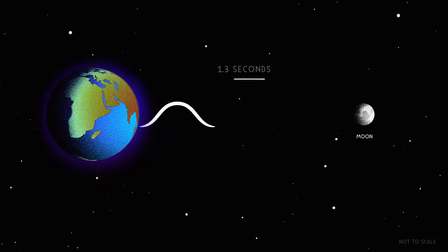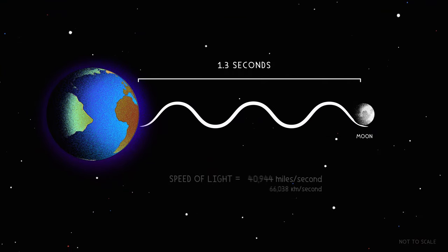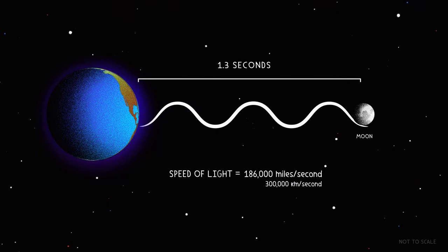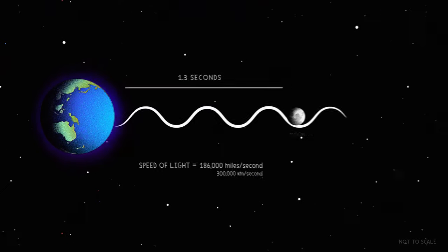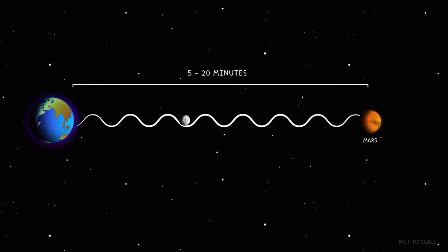Radio waves also travel really, really fast, at the speed of light. That's 186,000 miles per second. But our solar system is also really, really big.